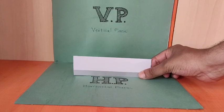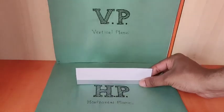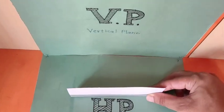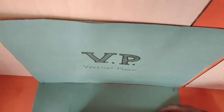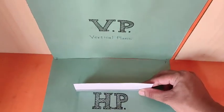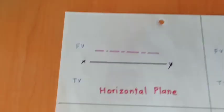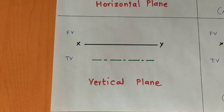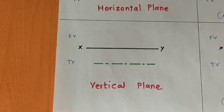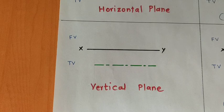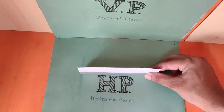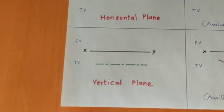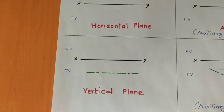The next type of plane is parallel to the vertical plane and perpendicular to the horizontal plane. Such a plane is called a vertical plane. You will be able to see this plane in the top view. Since it is parallel to VP, once you rotate HP 90 degrees clockwise, you will be able to see it in the top view.